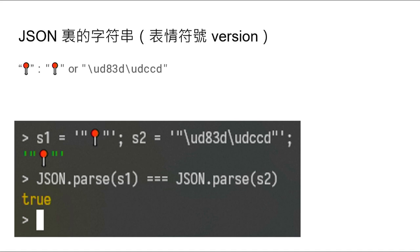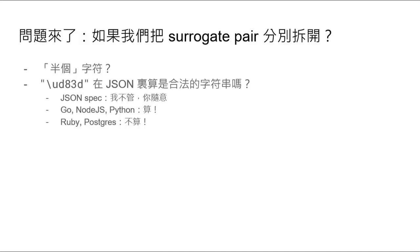紅燈的符號。那這裡就有個問題，我們這裡有一個surrogate pair，就有D83D和DCCD兩個東西組成。那如果我們把它拆開，只放這個D83D，它是個什麼東西呢？首先它肯定不是任何字符，它只是半個字符。